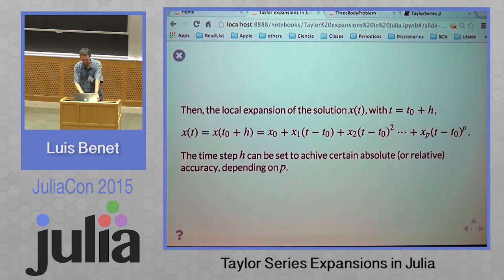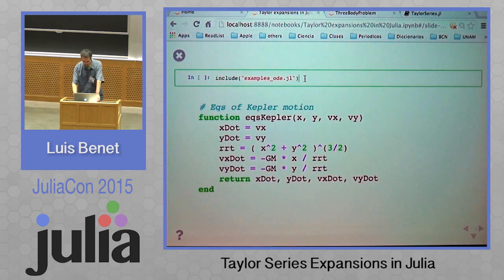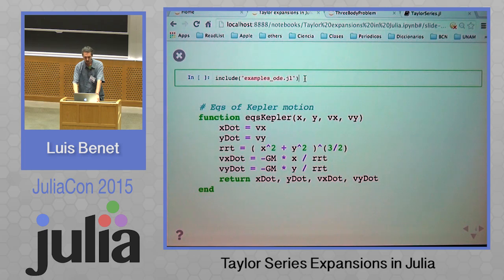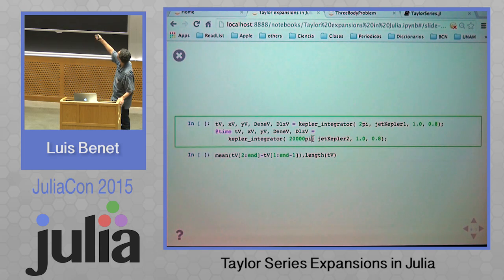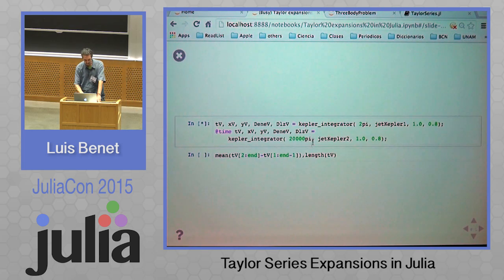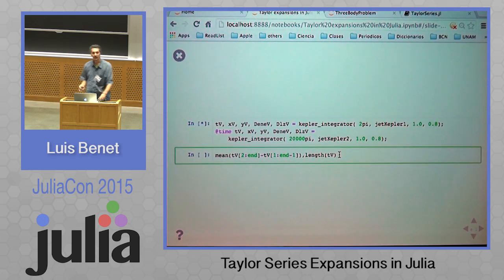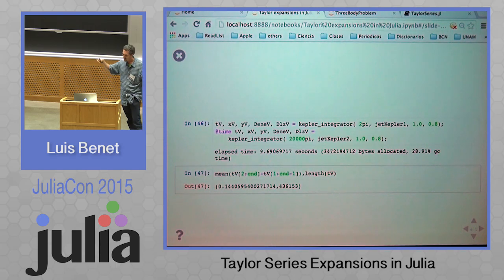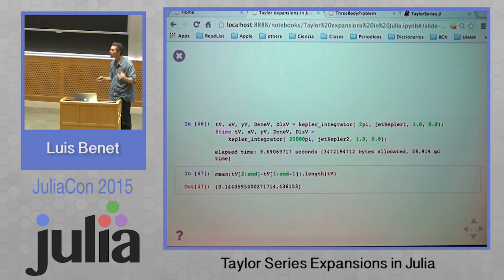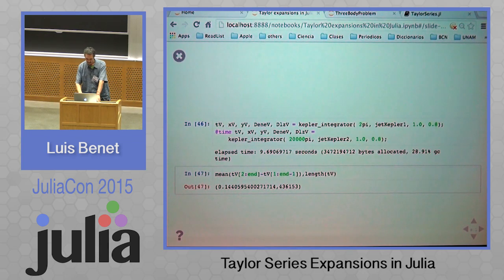I will show it with the easiest example, which is Kepler motion — Jupiter rotating around the Sun, with the Sun at the center of mass. I have written a couple of wrappers. It takes a little bit long because it is calculating a bunch of points. Since we are expanding to order 28 in the Taylor expansion and fixing the precision to 10^{-20}, you end up with a bunch of points: 43,600 points, and this is the mean step.